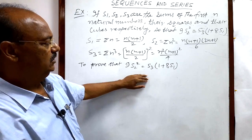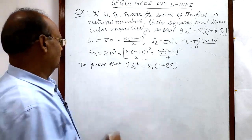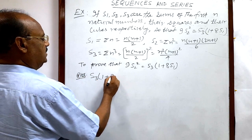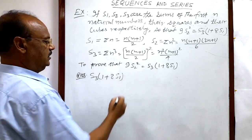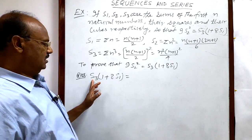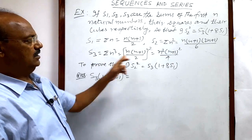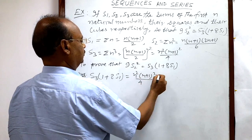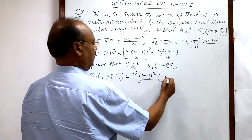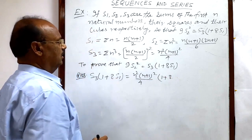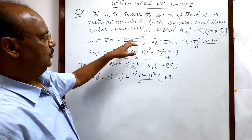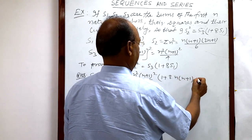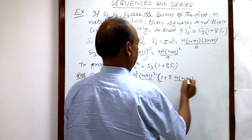It is convenient to start from the right hand side. The right hand side is S3 into (1 + 8 S1). Substituting values: S3 is n²(n+1)²/4, multiplied by (1 + 8 × S1), where S1 is n(n+1)/2, giving us 8n(n+1)/2.